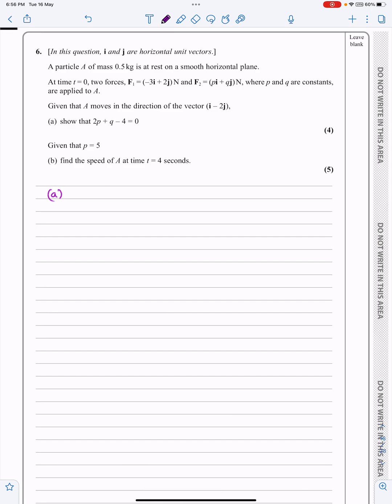At time T equals 0, we've got two forces, F1 and F2, as you can see there, where P and Q are constants. Given that A moves in the direction of the vector I minus 2J, can we show that 2P plus Q minus 4 is equal to 0? Yeah, we probably can. I don't think that'll be too complicated.